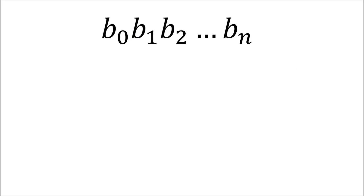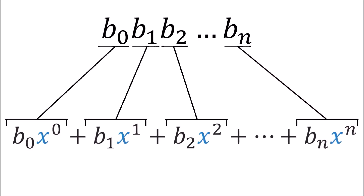With cyclic codes, we often represent the codewords as polynomials. So with this codeword where the bits are b0, b1, b2, all the way to bn, we can represent this as a polynomial by multiplying each bit by a power of x and adding all the terms together. So the b0 bit gets the 0th power of x, which is just 1; b1 gets x; b2 gets x squared; and bn gets x to the power n. And this is the resulting polynomial for this codeword.